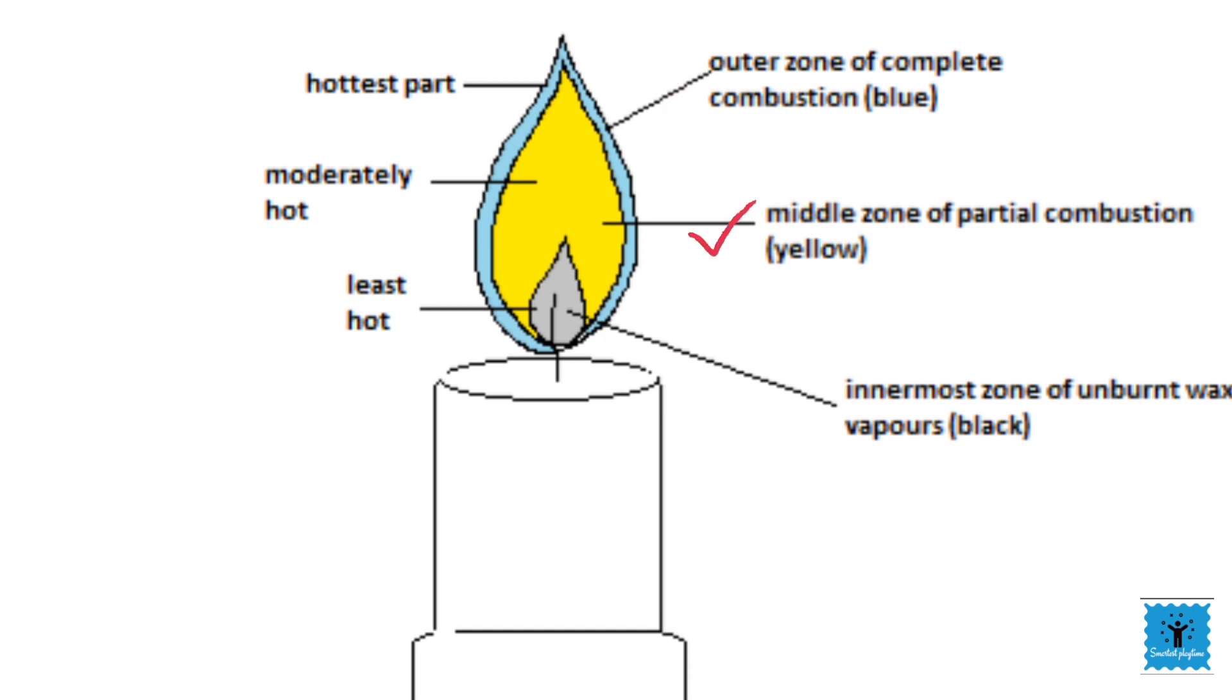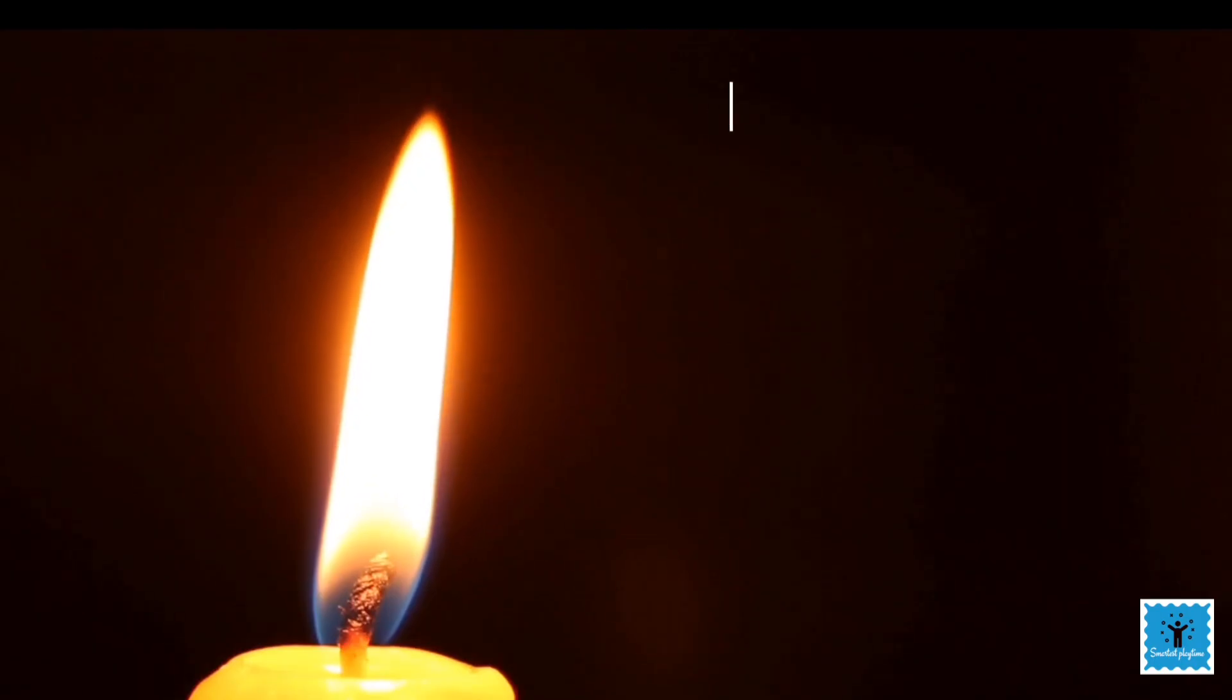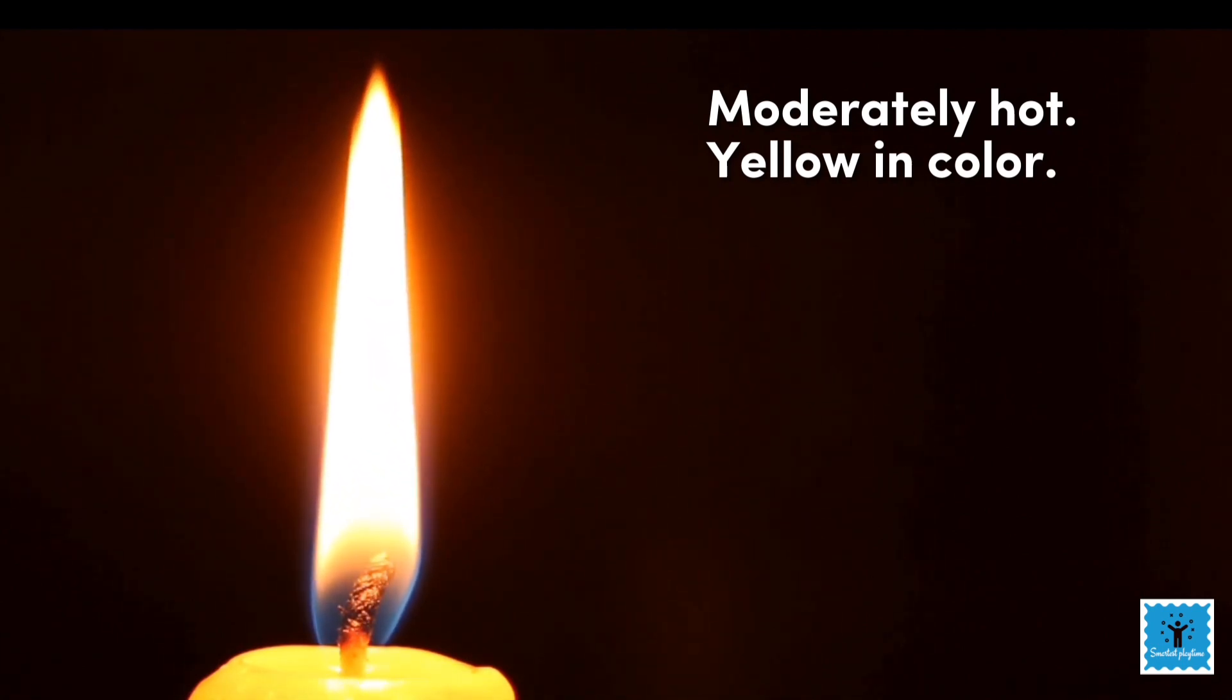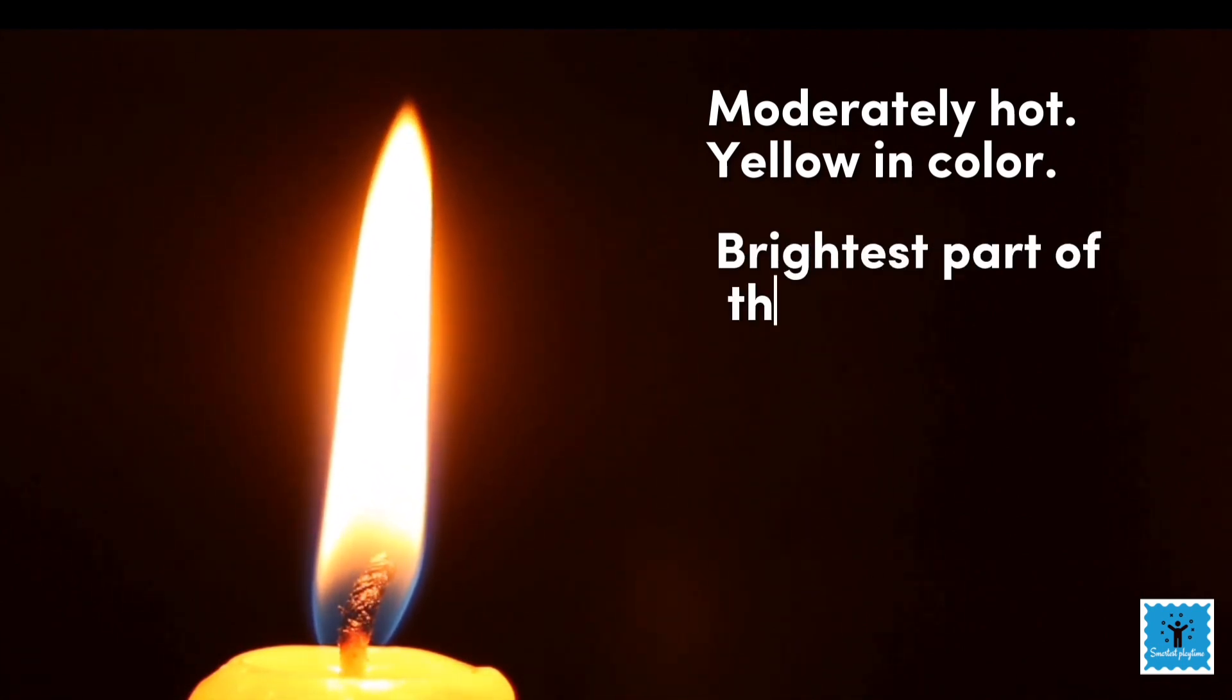Next is the middle zone of the candle flame. It is moderately hot and is yellow in color. Yellow color is due to the partial combustion of the fuel. It is the brightest part of the flame.